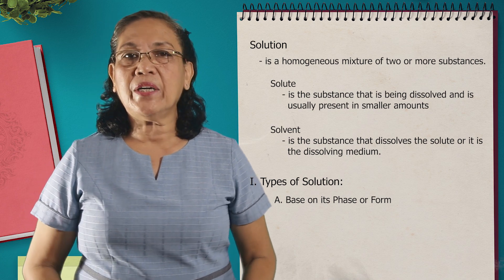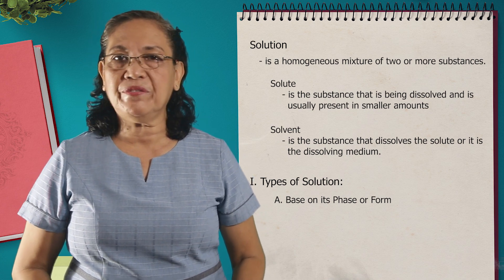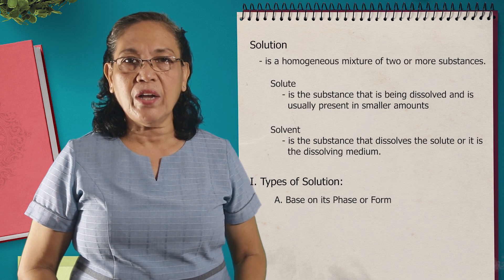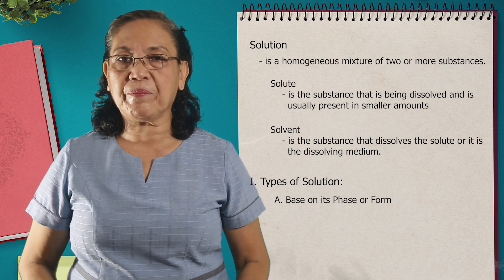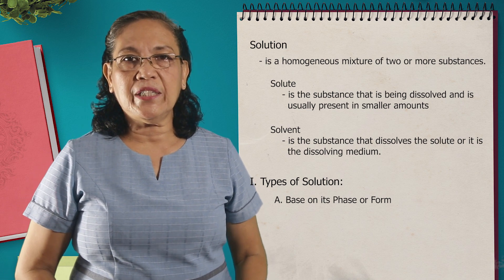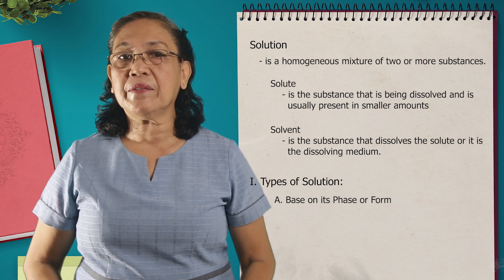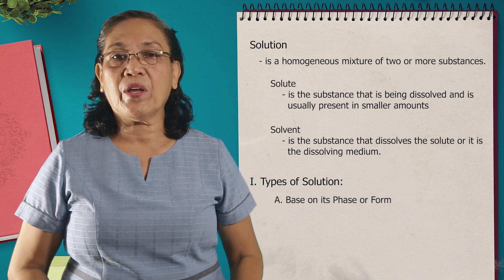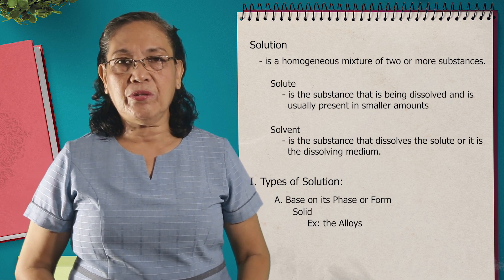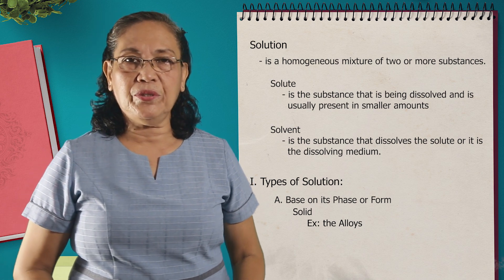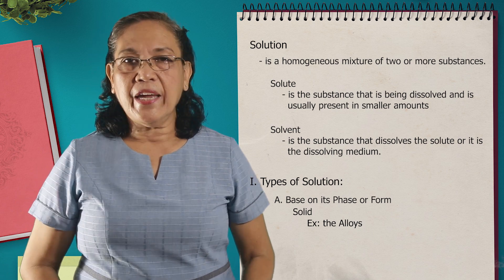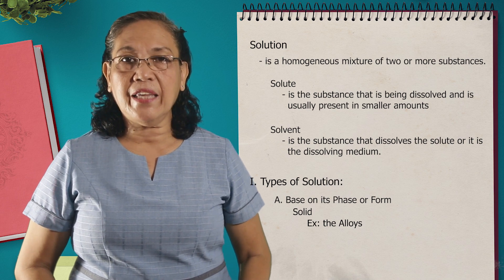Two, based on the dissolution of the solute in the solvent. And three, based on the amount of the solute that is dissolved in the solvent. So let's go back to number one. When we say the type of solution classified based on the phase or the state or the form of the solution, we have the solid, the liquid, and the gaseous solutions. For the solid solution, the final state or the resulting state is a solid, and you can see this in the alloys.